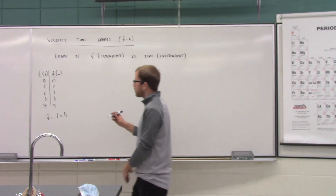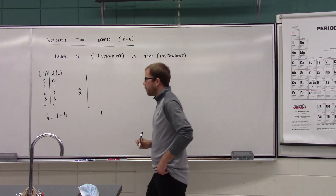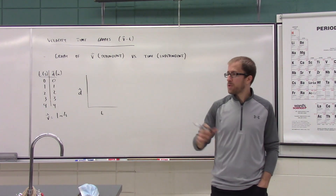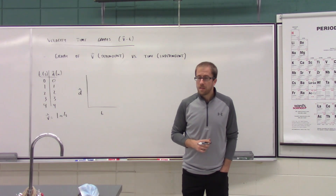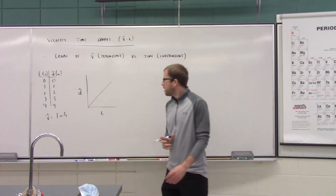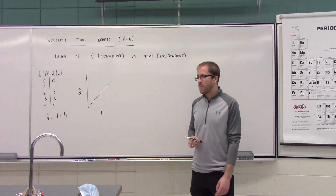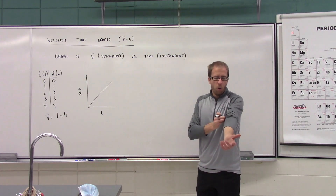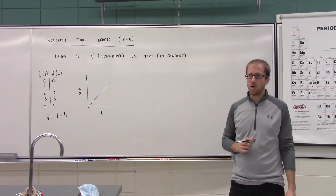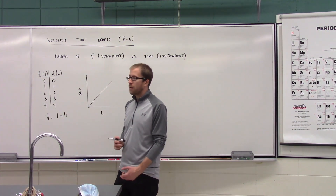We explored what this looked like on a position-time graph. On a position-time graph, this would be a straight linear line. The slope of a position-time graph represents velocity — if I found the slope of this line, it would be one meter per second, which is our velocity.